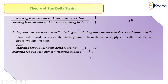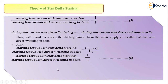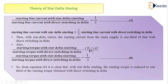A similar result applies to torque. The starting torque with star delta starting is proportional to (V_L divided by root 3) squared. Taking the ratio: starting torque with star delta starting divided by starting torque with direct switching in delta equals (V_L divided by root 3) squared divided by V_L squared. Cancelling terms, this ratio equals 1 by 3 — equation 6. So starting torque with star delta starting is 1 by 3 times the starting torque with direct switching in delta. Using star delta starting reduces the starting torque to one third of its value compared to direct delta connection.